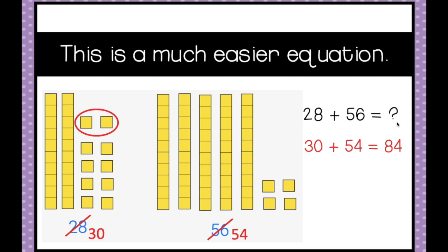I know for myself it would have taken a lot more thinking to figure out 28 plus 56 than to use the compensation strategy to change those numbers to 30 plus 54.